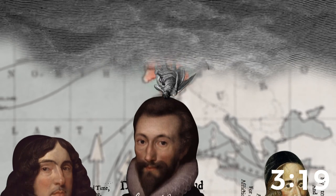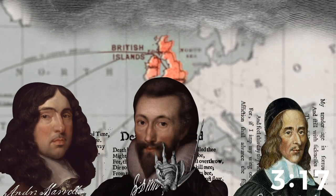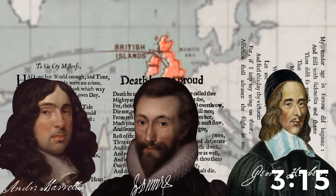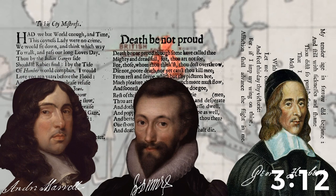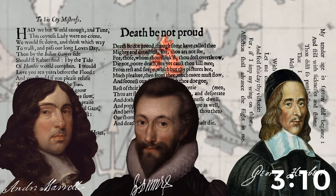The metaphysical poets came up with what are called conceits, that is analogies or metaphors that are unusual, that even take some work to figure out. They're creative, they're different, they're kind of mind-bending sometimes.